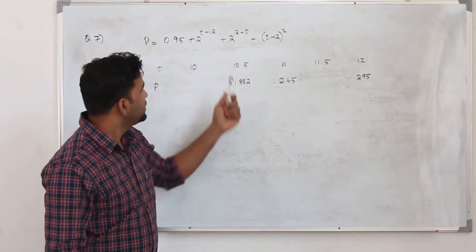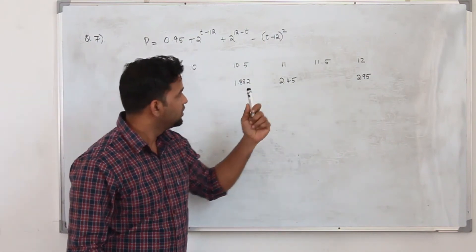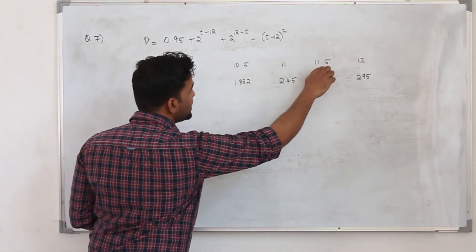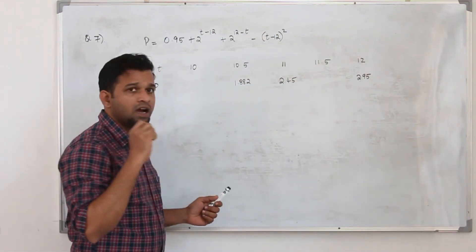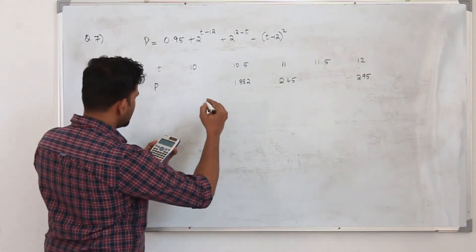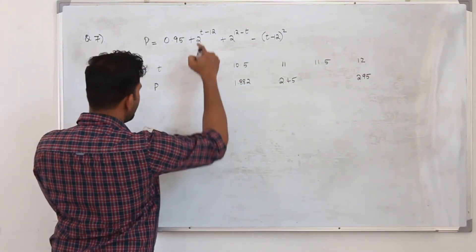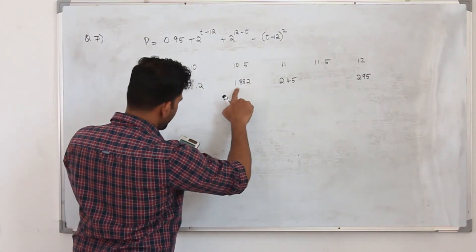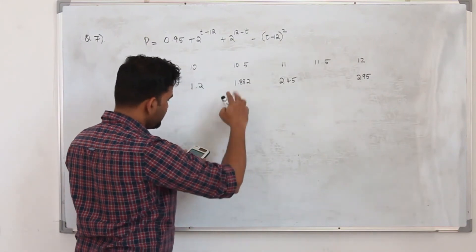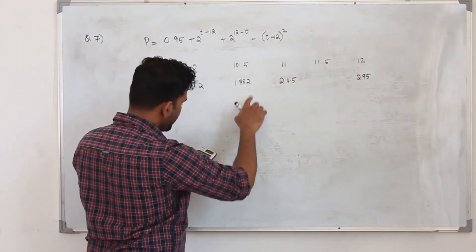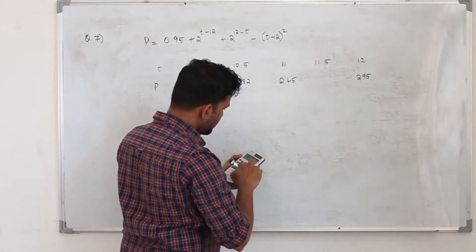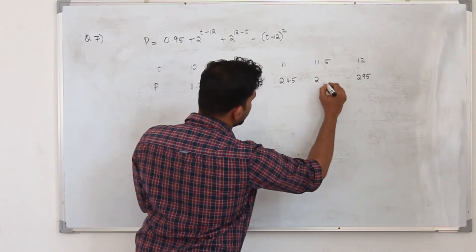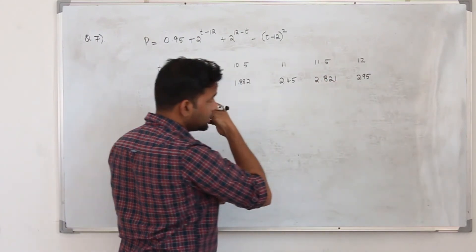Here you are given the function P. Replace T = 10 to get the first missing value: P = 1.2. Replace T = 11.5 to get 1.8819, which rounds to 1.882 to 4 significant figures. The next value is 2.45, and the following is 2.821. It's just substituting the missing T values into the equation.